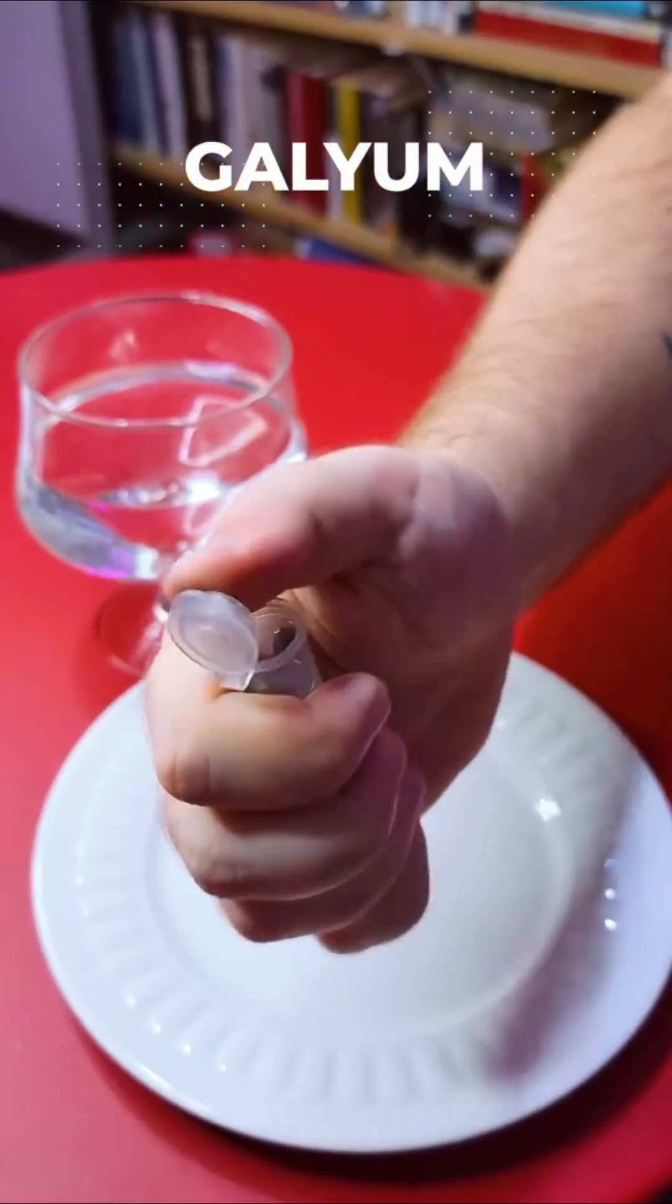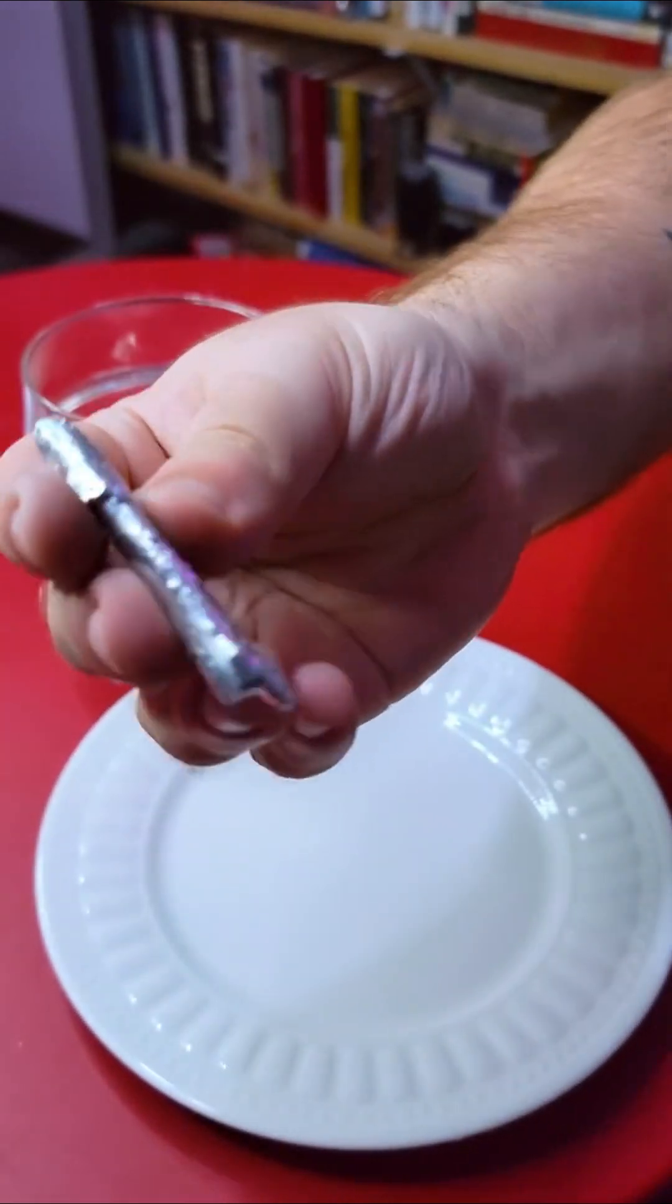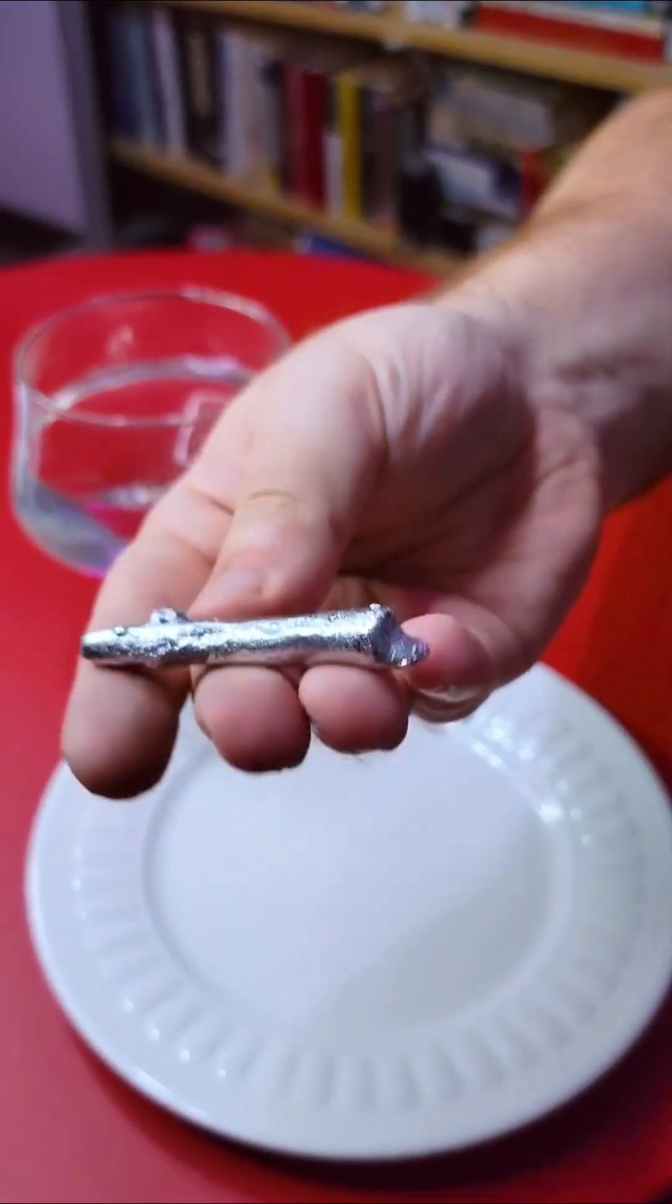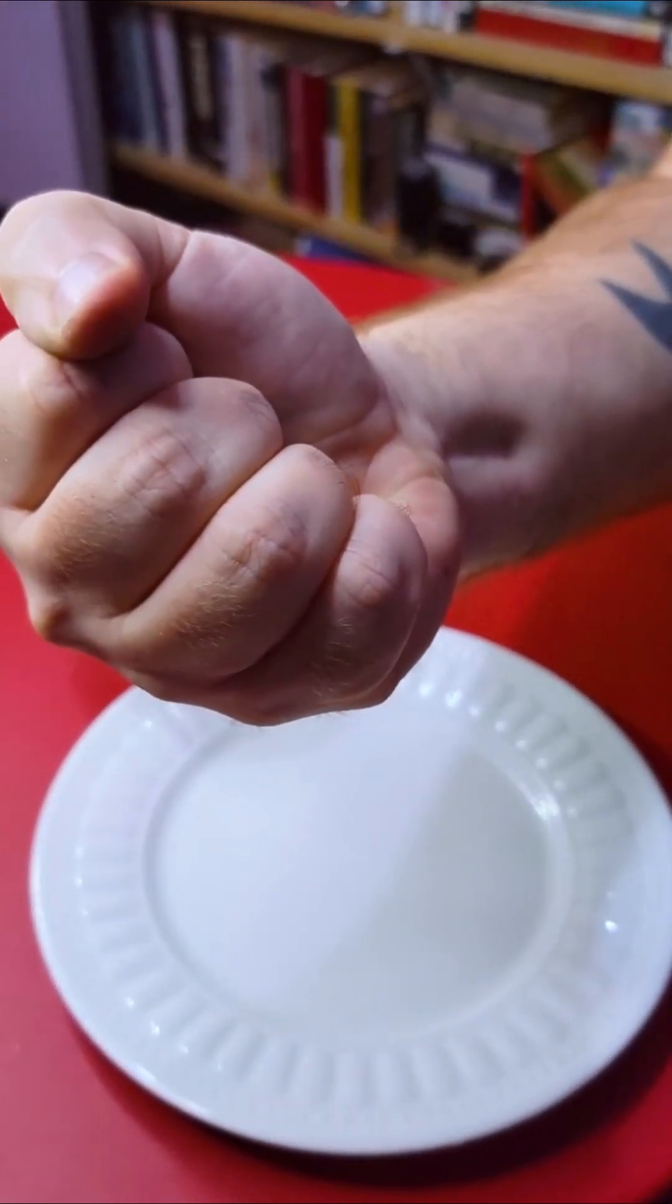This is not mercury. This is gallium. It is an extraordinary metal that is very rare in nature, has no known biological function, and unlike mercury, it is not toxic so we can hold it in our hands.